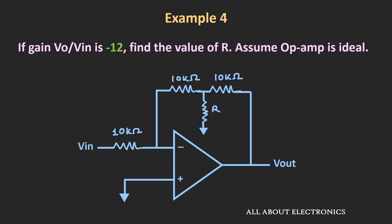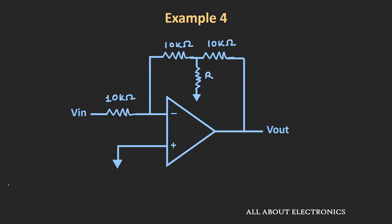Now let's see the fourth example. In this example, the gain Vout divided by Vin is equal to minus 12, and we have been asked to find the value of resistor R. To find this value of R, we will apply KCL at two particular nodes. Let's call this node A and this node B.